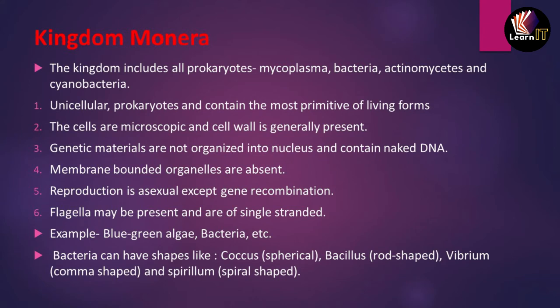The mode of reproduction is basically asexual, but at the time of genetic recombination it differs. Some of them may have flagella, allowing them to move from one place to another. Examples include blue-green algae and bacteria. Bacteria can have different shapes: spherical (coccus), rod-shaped (bacillus), comma-shaped (vibrio), and spirally shaped (spirillum).